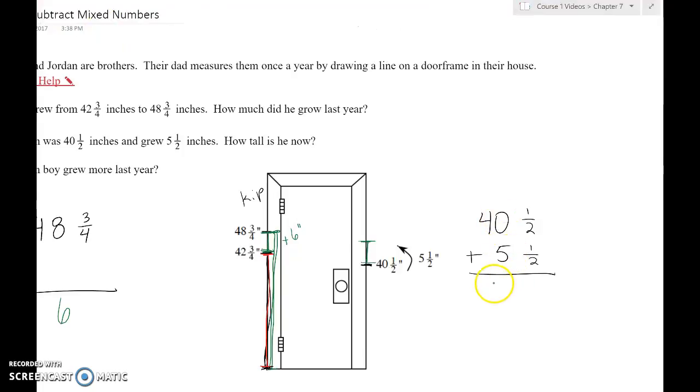40 inches plus 5 inches is 45 inches. But he also added a 1/2 inch. He added 1/2 inch on top of his other 1/2 inch. So 1/2 plus 1/2 is 1 whole. So it is 2 1/2, which is the same thing as 45 plus an extra inch, which is 46 inches. So Jordan is 46 inches.